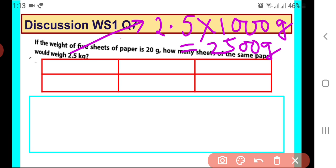So let us first fill the table. So here it is given weight of 5 sheets. So first we will take number of sheets, and then in the second column we will write weight in grams. As you can see that we have converted 2.5 kilograms into grams.